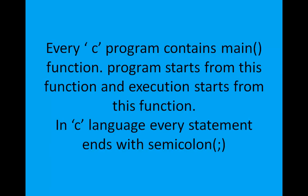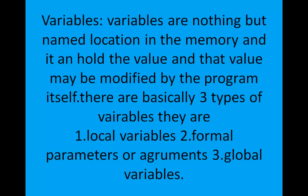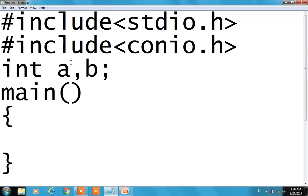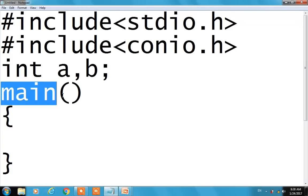Every C program contains a main function. The main function is the starting point — it is the entry of the program and execution starts from this function. The main function is compulsory.